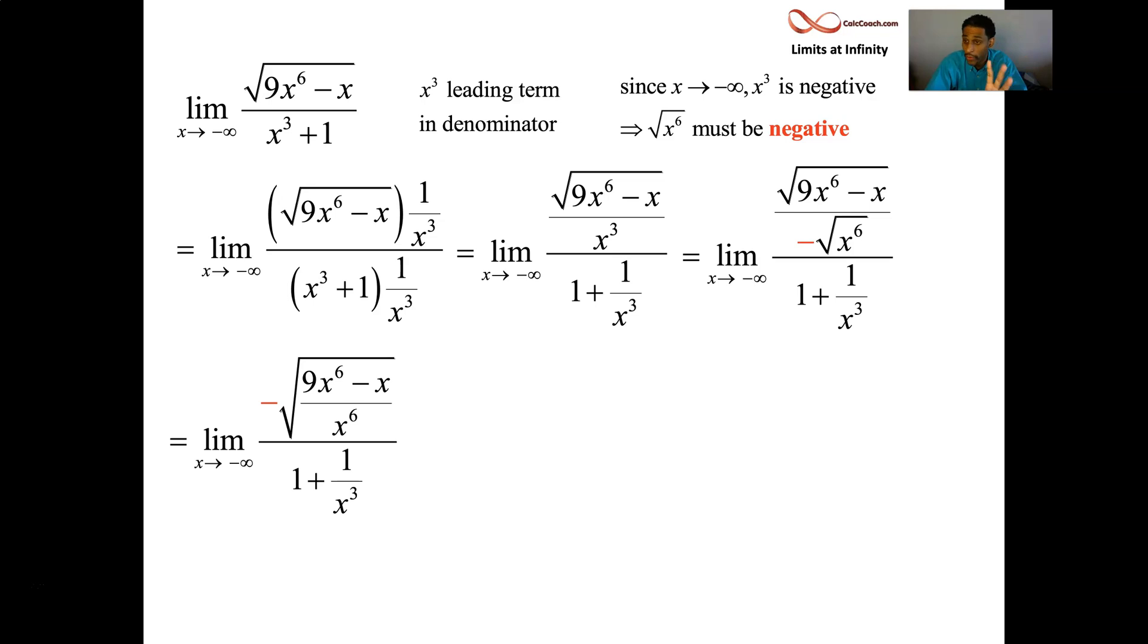So now I can write it as one root. Keep that negative out there. And now I can combine the two parts, the part that was already underneath the root, the part that I kind of like created to be underneath the root. I can now, multiple terms in the numerator, but a single term in the denominator, I can combine them. And so I make it nine x sixth over x sixth minus x over x sixth. And I cancel. I have a nine minus one over x to the fifth.